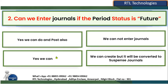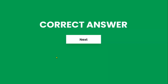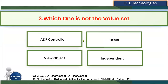The correct answer is: yes, we can create journals in a Future period, but we will not be able to post them. Posting is only possible when the period is in Open status.